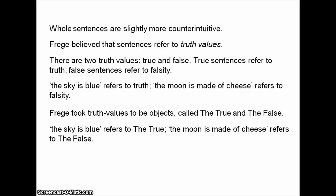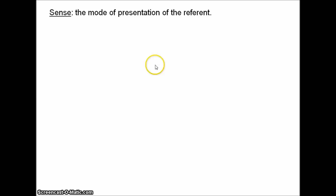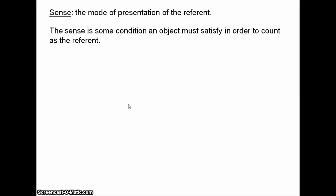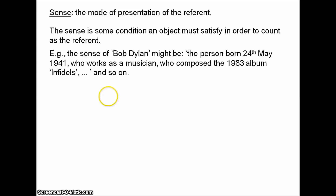But this latter oddness is relieved somewhat by the notion of sense. I've said that sense is the mode of presentation of the referent — it's essentially a way of thinking about the referent. More precisely, the sense is some condition an object has to satisfy in order to count as the referent. For example, the sense of 'Bob Dylan' might be 'the person born on the 24th of May 1941 who works as a musician, who composed the 1983 album Infidels,' and so on. We have enough detail there to specify the referent as being the man Bob Dylan — namely, Bob Dylan himself satisfies this condition.